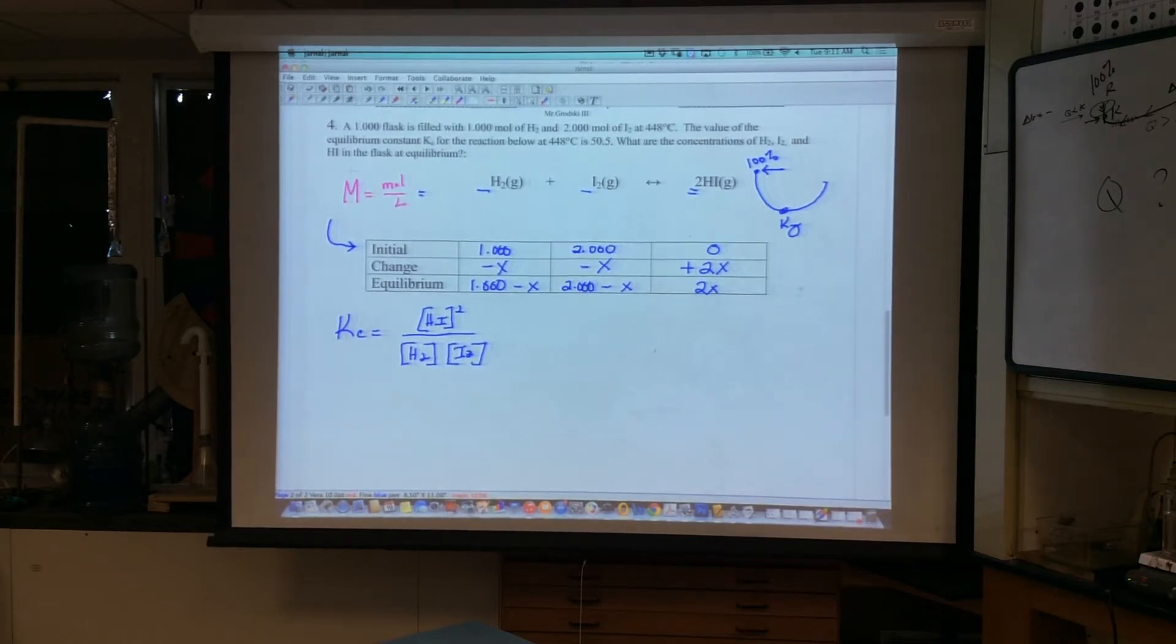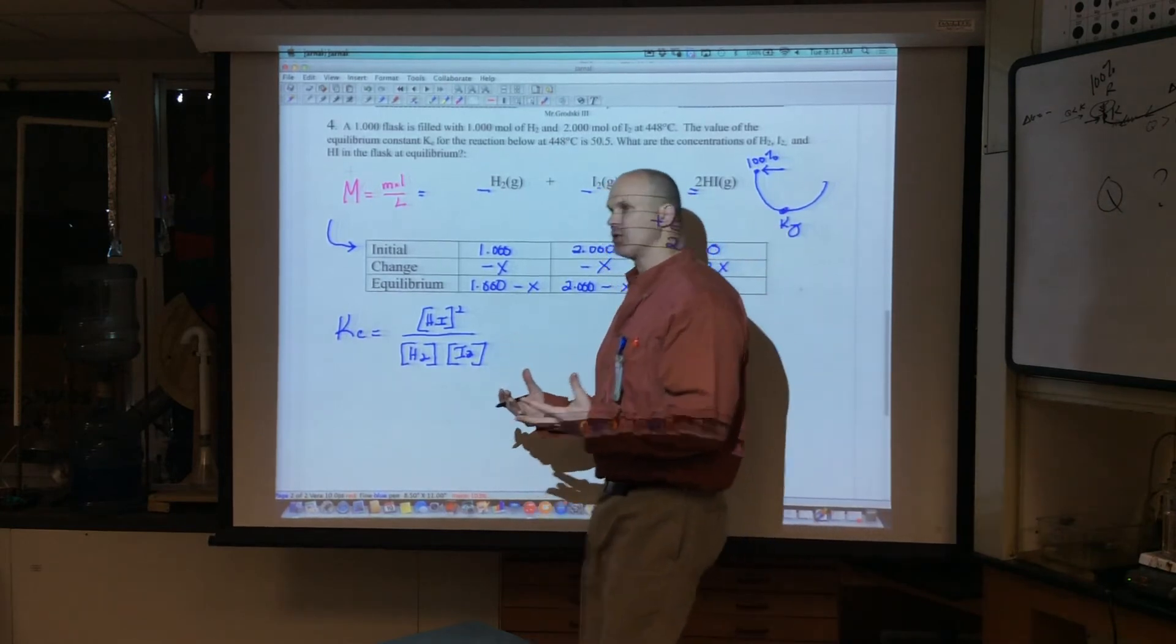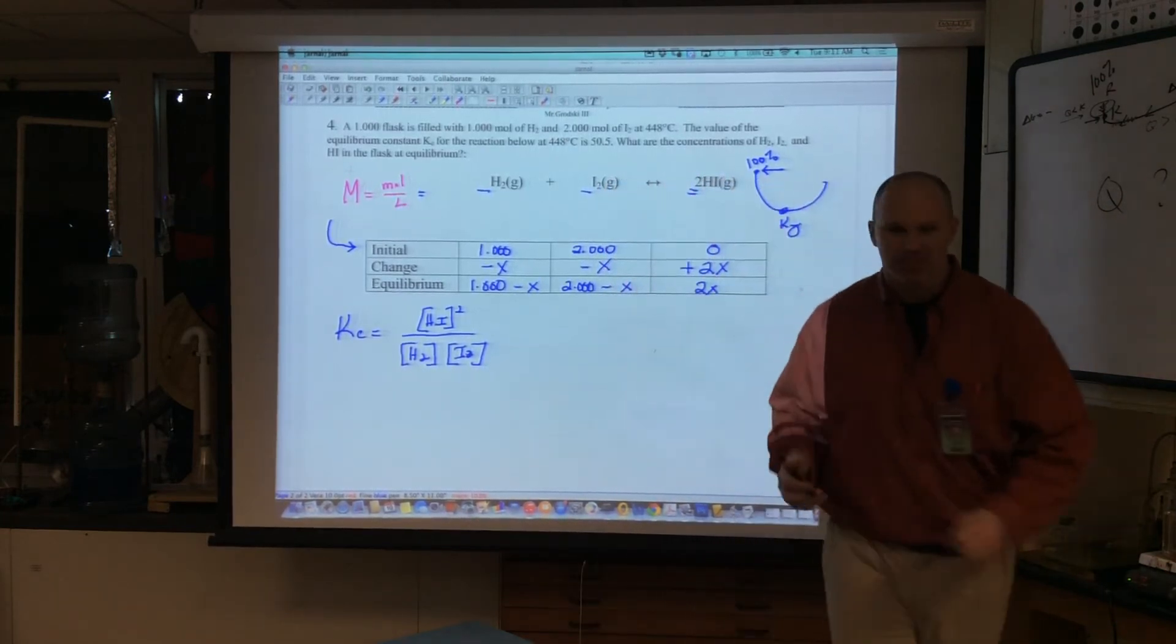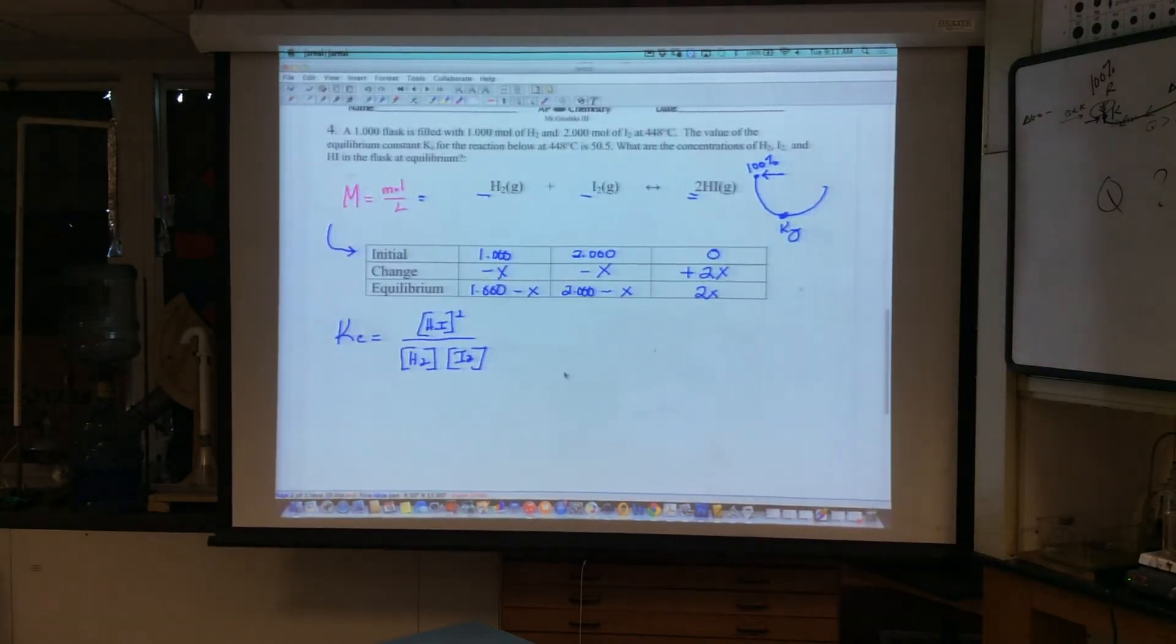Every equilibrium problem will ask you to write it at least for a point. So KC or KEQ is equal to products HI squared over the reactants, H2. I'm using brackets even though they're gases because they're molarity still. Gases can be solutions. And a good thing they're solutions. Solutions are homogeneous because you never want that scenario where you're running on the soccer field, and you run into a pocket of no oxygen. Obviously, solutions are homogeneous. Oh, he's about to score. Oh, we had a pocket of no oxygen. It doesn't happen.